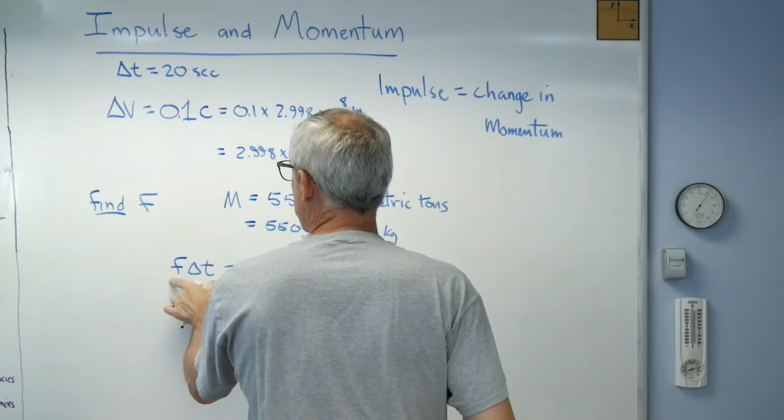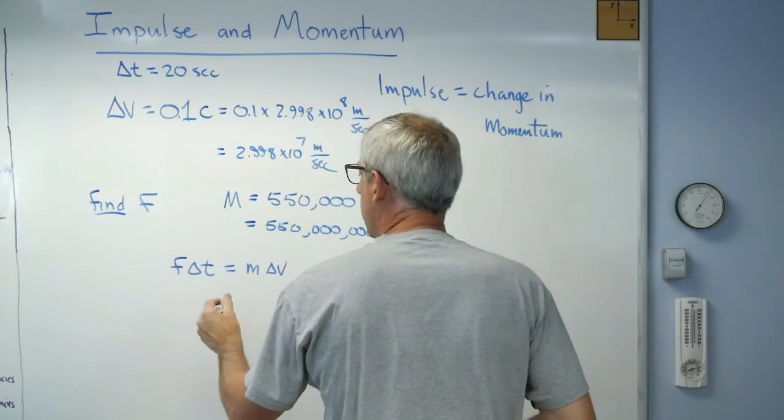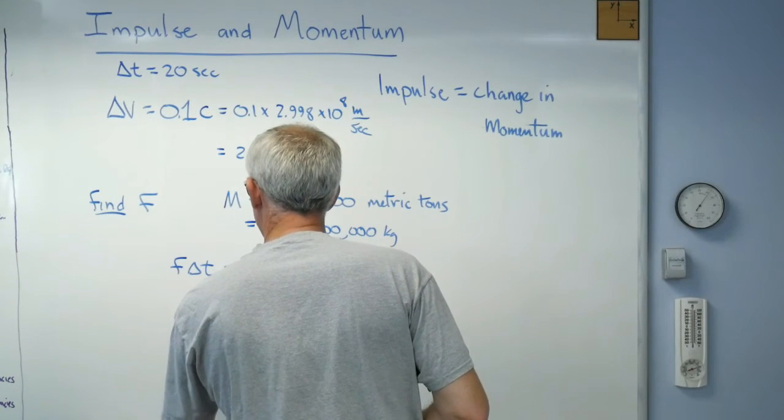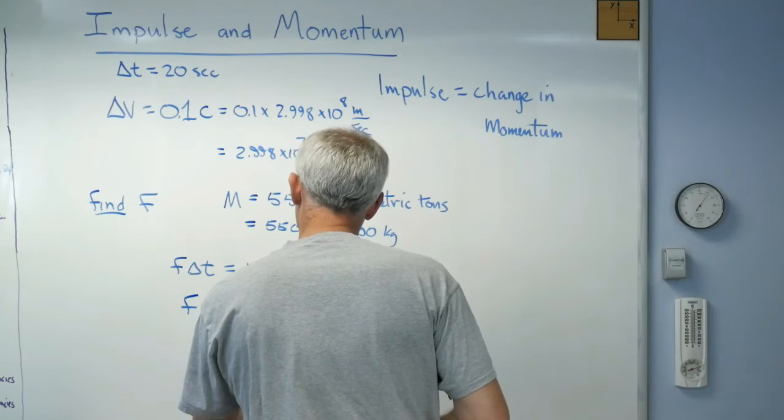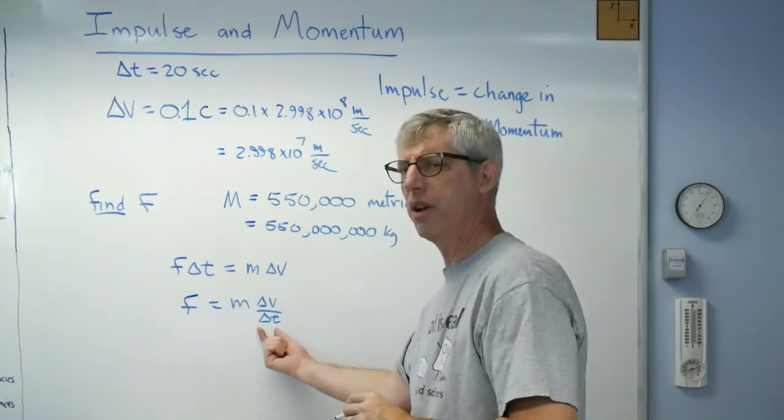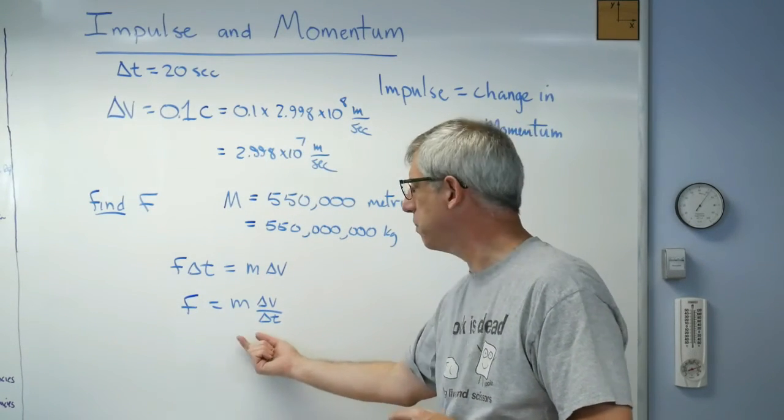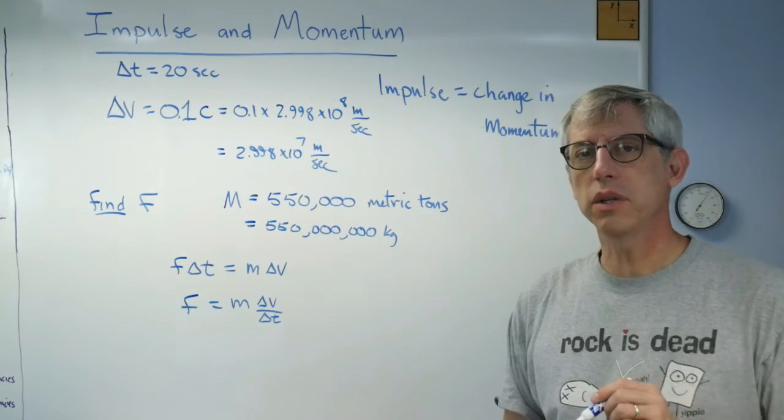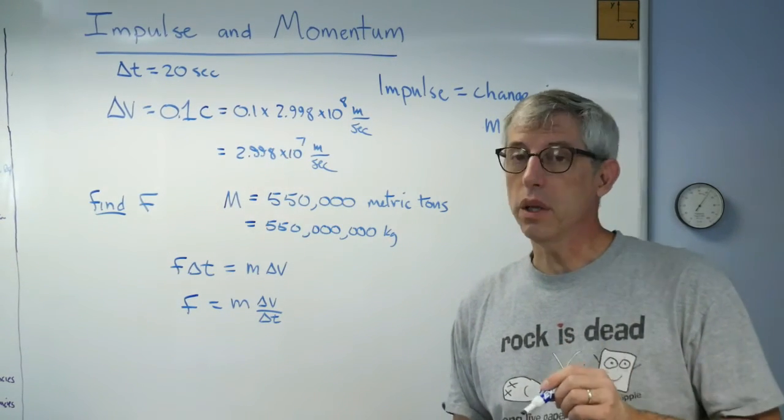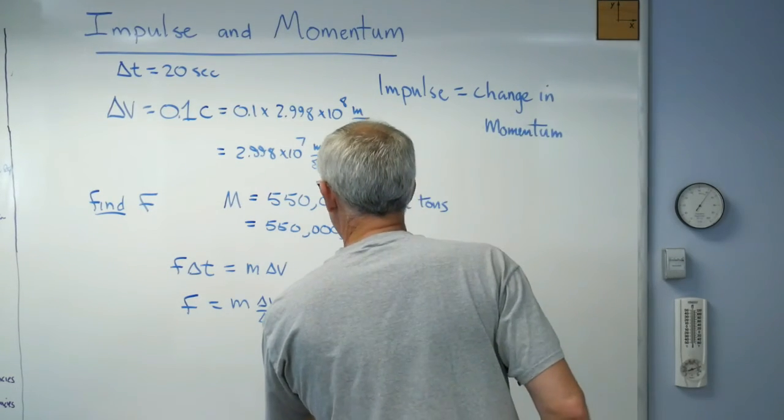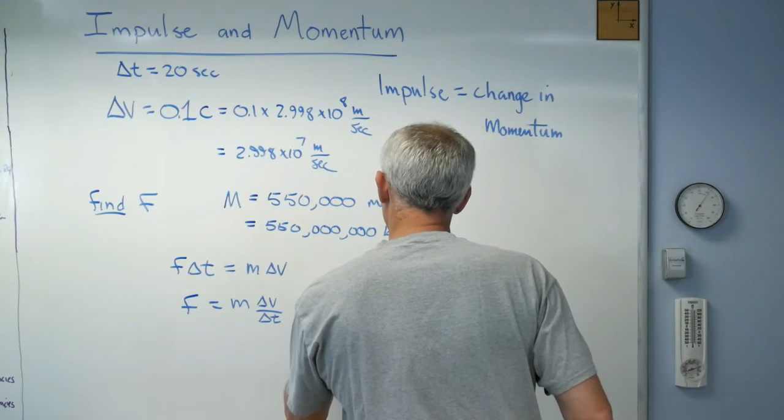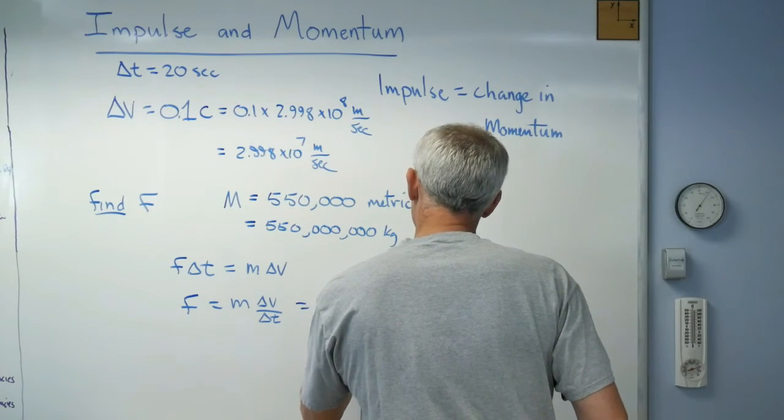So take this expression where there's impulse on one side and momentum on the other. By the way, that looks an awful lot like what we started with, doesn't it? That's basically Newton's law right there. So when you say impulse equals change in momentum, it's really just another way of stating Newton's law. So we're going to get this just gargantuan amount of mass.